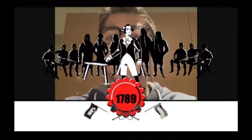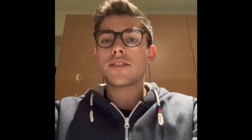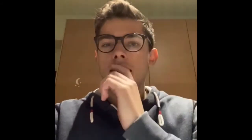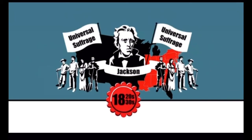For example, in 1789, George Washington won the election with 100% of the votes, but only 6% of Americans voted — white men and landowners. In 1830, Jackson, the first common president of America, promised universal suffrage, but it was a white man's suffrage only.